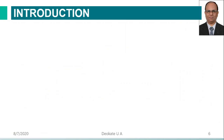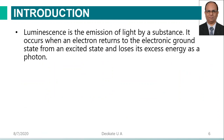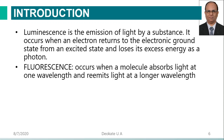So today we are observing what fluorescence is. Before going to fluorescence, you must understand the term luminescence. Luminescence is an emission of light by a substance. Fluorescence is just a small part of luminescence. Luminescence has many types: bioluminescence, chemiluminescence, fluorescence, and phosphorescence. Luminescence occurs when an electron returns to the electronic ground state from an excited state and loses its excess energy as a photon.